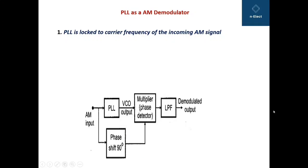Moving on to the PLL as AM demodulator — when we are using PLL as an AM demodulator, instead of 3 blocks we have shown a complete PLL phase-locked loop circuit. The amplitude modulated signal is applied here and it is also parallely applied to the phase shift block. When the amplitude modulated signal comes across the PLL, the output signal is phase shifted by 90 degrees. Since the PLL introduces a 90 degree phase shift, we also apply a phase shift of 90 degrees so that the signals at both inputs of the phase detector are in phase with each other.